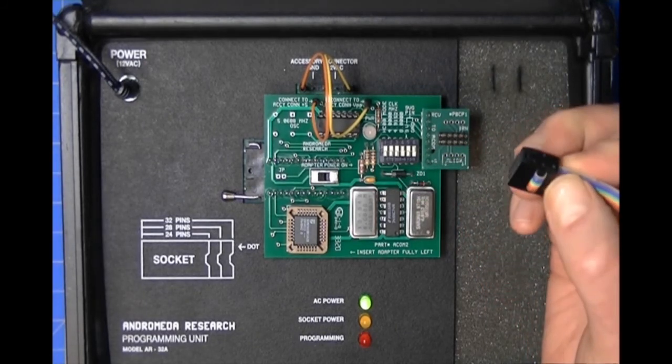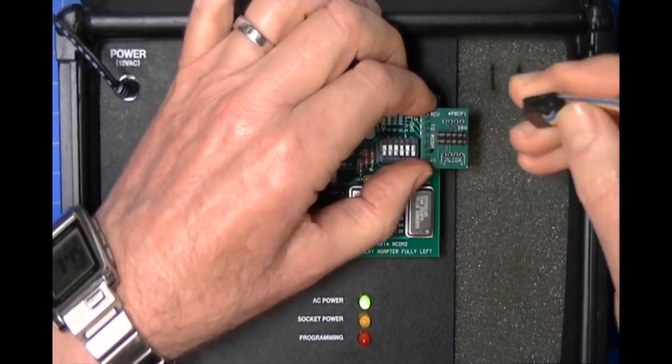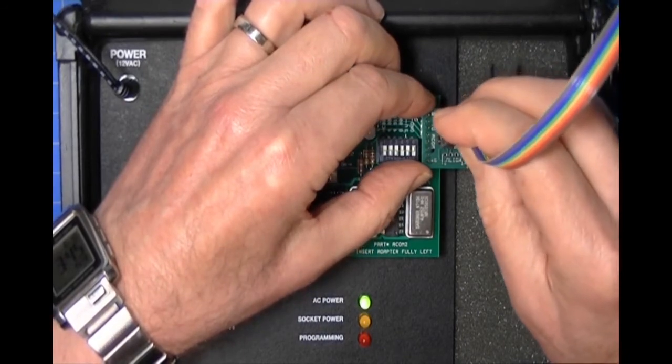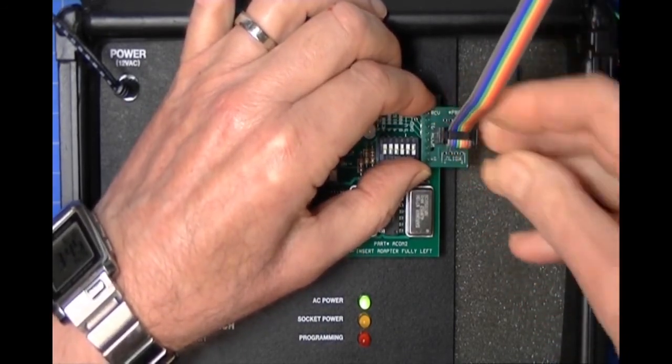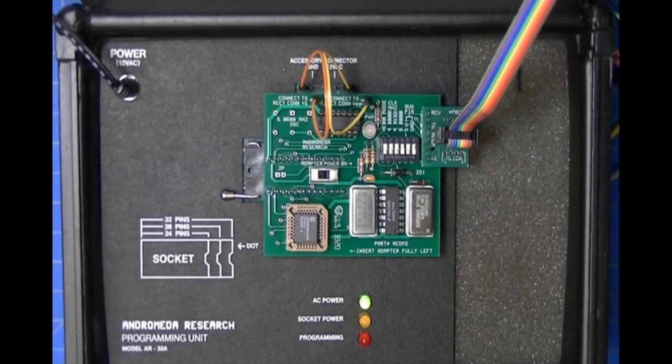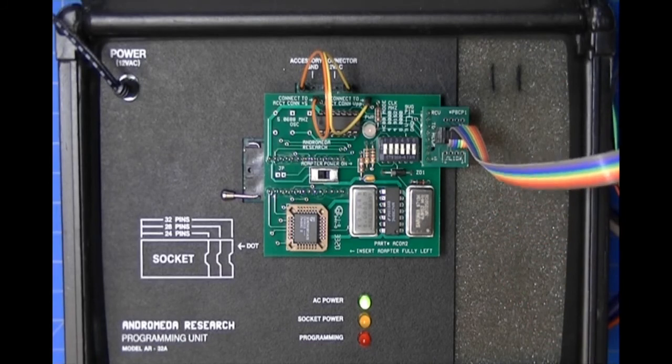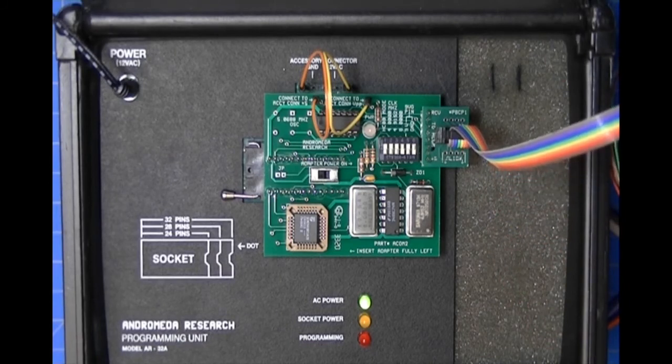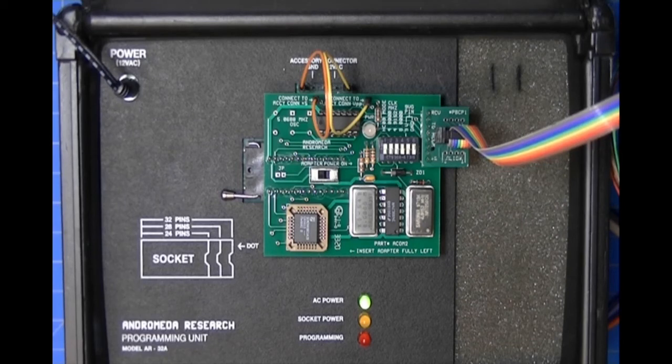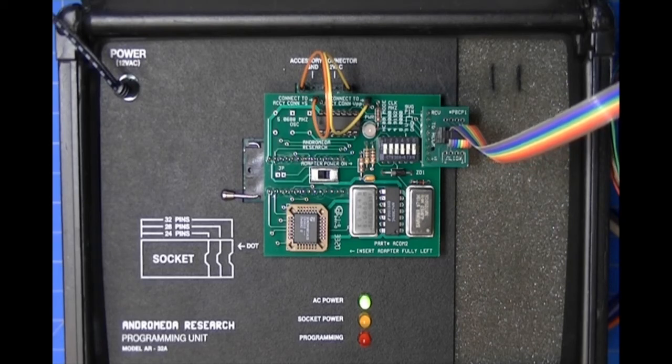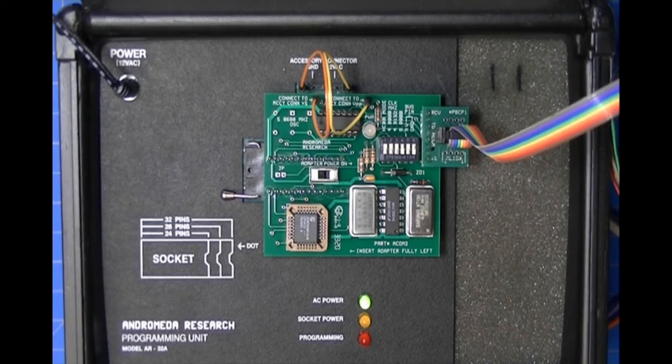The black plug attaches to the transition board on the ACOM 2, and again the brown wire goes on the right. So we just push the plug over the top of the connector, and we're now ready to attach to our processor and our module.